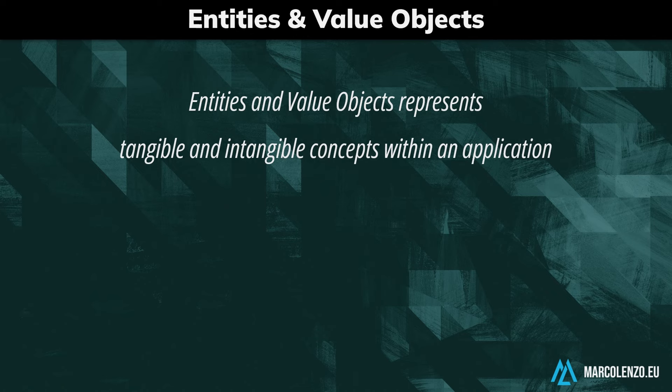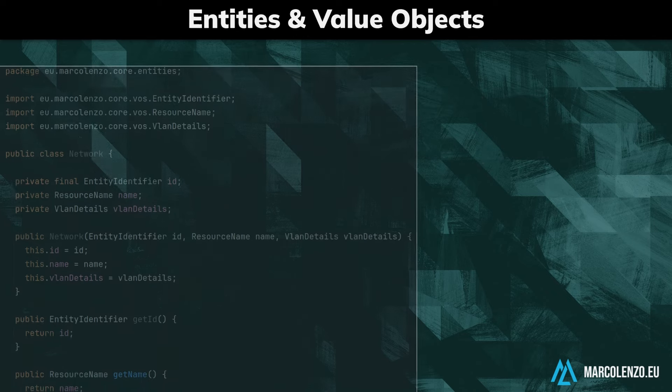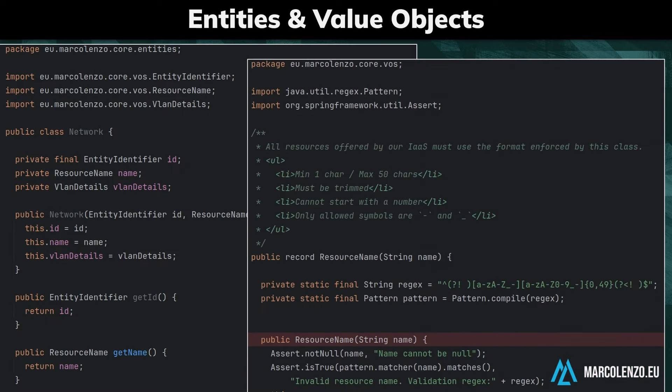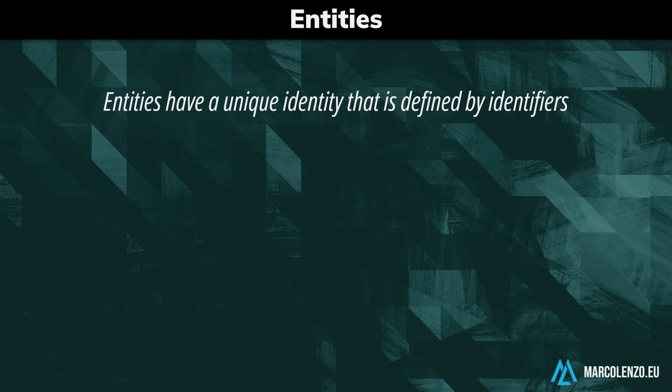Entities and value objects represent tangible and intangible concepts within an application. In object-oriented languages like Java or C-sharp, they both are classes with properties and behaviour. But what's the difference?